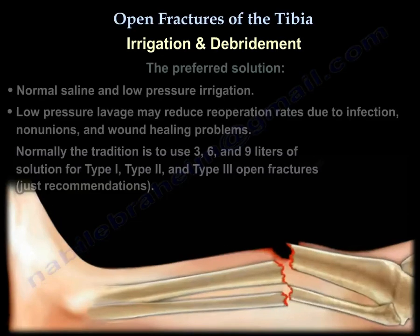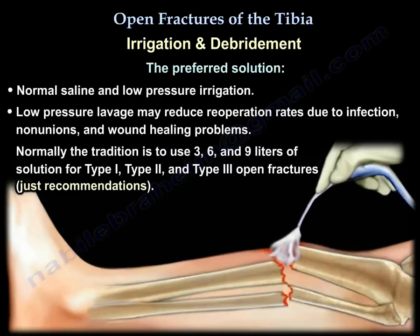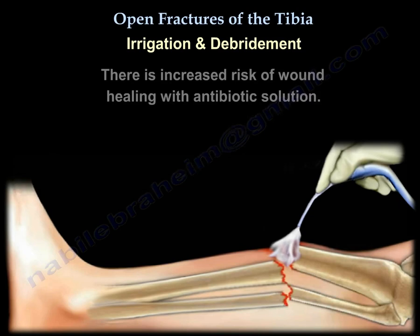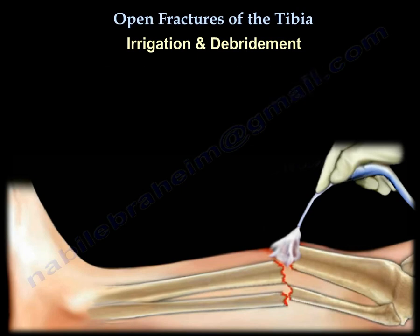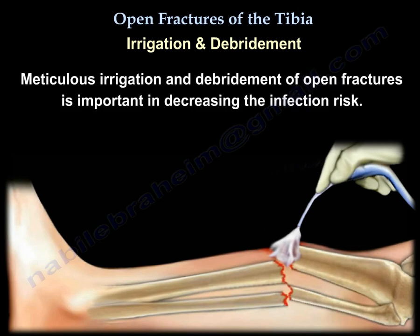The preferred solution for irrigation and debridement is normal saline with low-pressure irrigation. Low-pressure lavage may reduce re-operation rates due to infection, non-unions, and wound healing problems. Traditionally, three, six, and nine liters of solution are used for Type 1, Type 2, and Type 3 open fractures respectively — these are just recommendations. There is an increased risk of wound healing problems with antibiotic solution. Meticulous irrigation and debridement is important in decreasing infection risk.